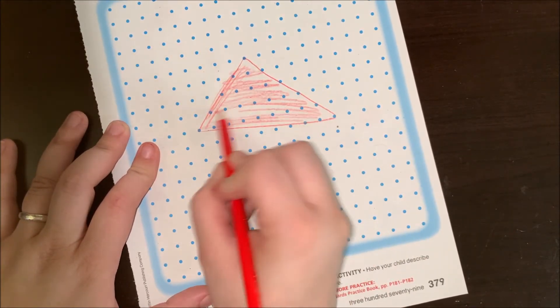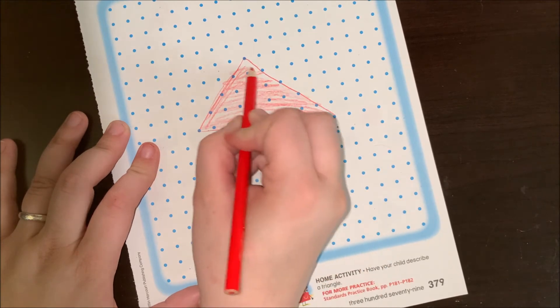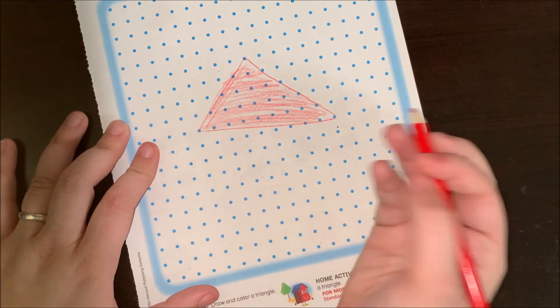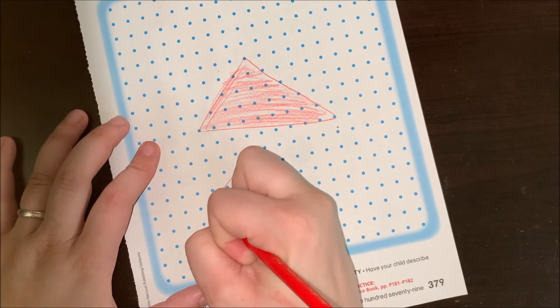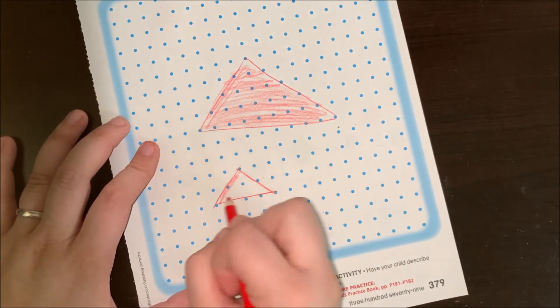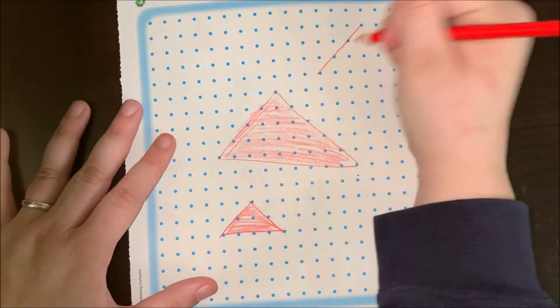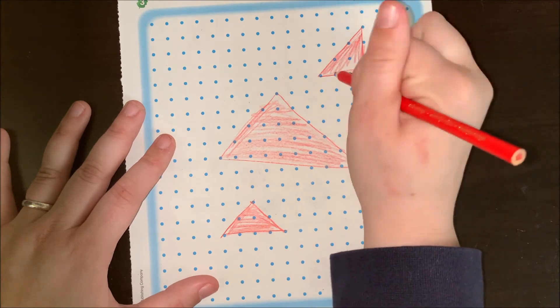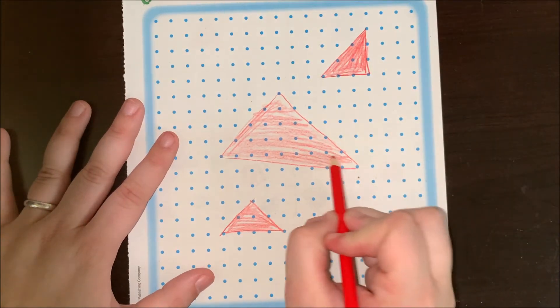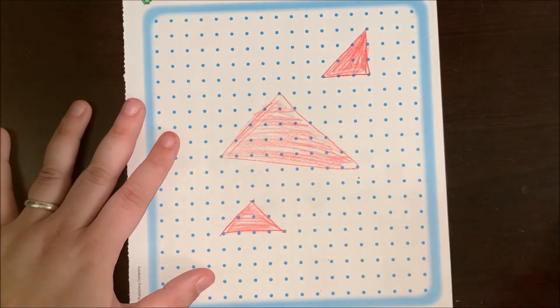So, go ahead and take a second and do, I'd say, three triangles in your dots. I have my one, two, three triangles.